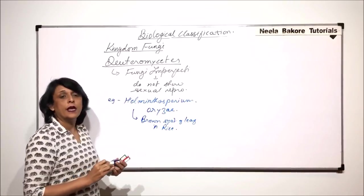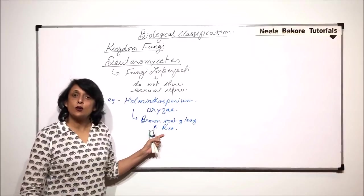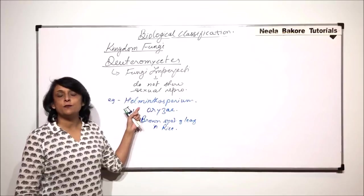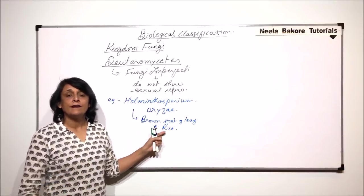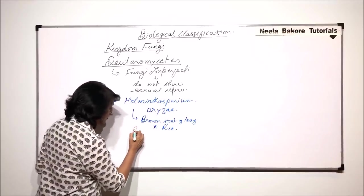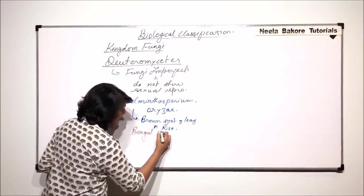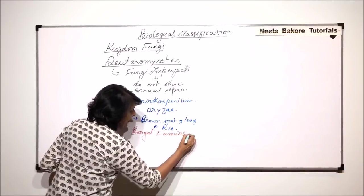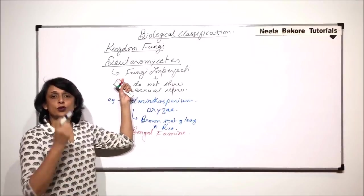There was a situation in Bengal where the entire rice crop was affected by this particular fungus, and the infection was so severe that the entire crop got destroyed. That resulted in a situation which we now know as Bengal Famine. So this particular member belongs to Deuteromycetes.